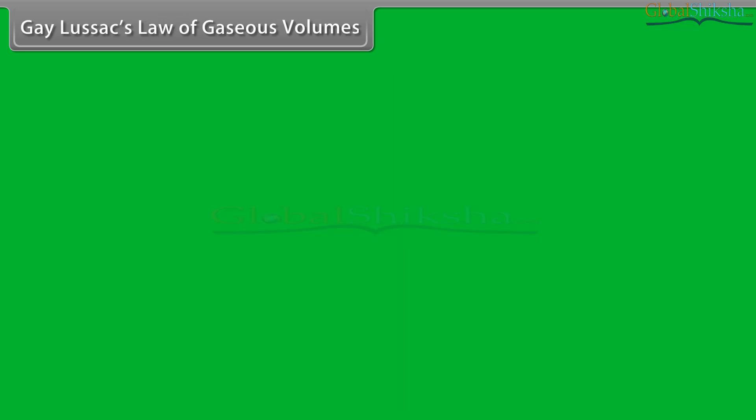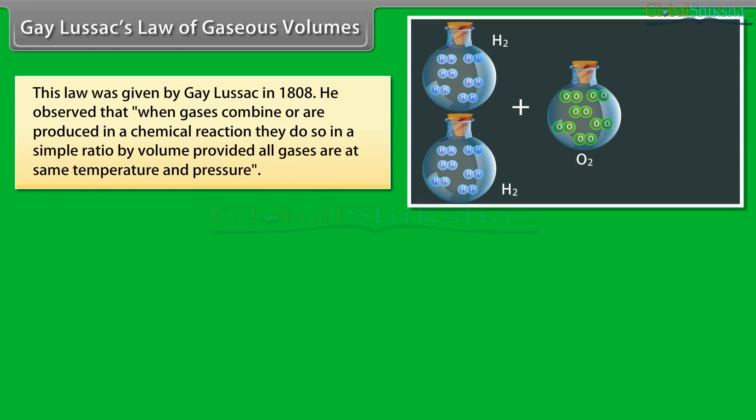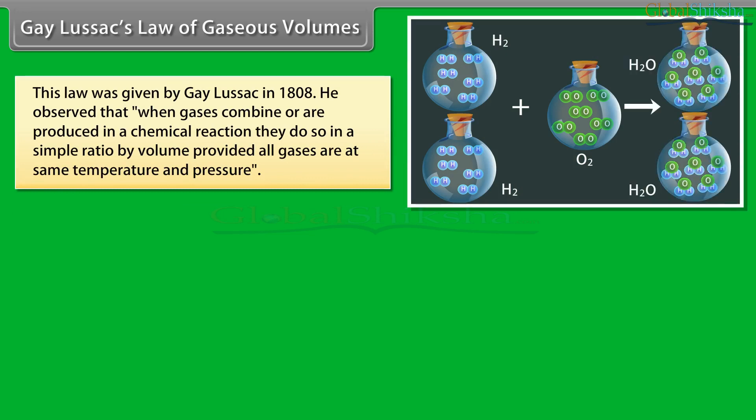Gay-Lussac's Law of Gaseous Volumes: this law was given by Gay-Lussac in 1808. He observed that when gases combine or are produced in a chemical reaction, they do so in a simple ratio by volume, provided all gases are at the same temperature and pressure.